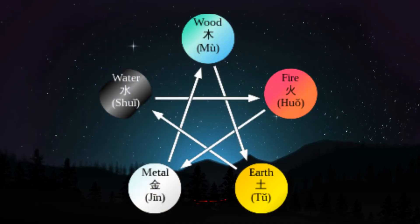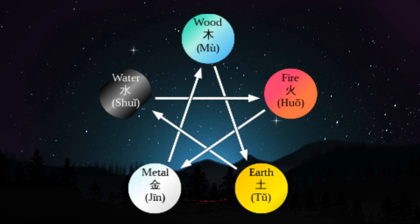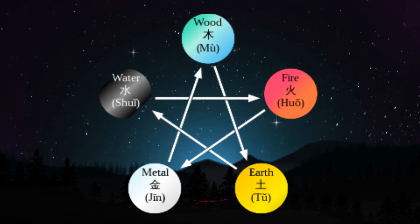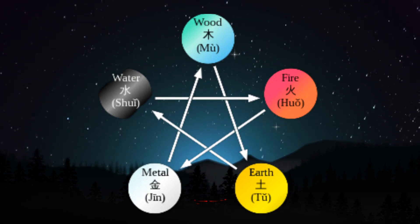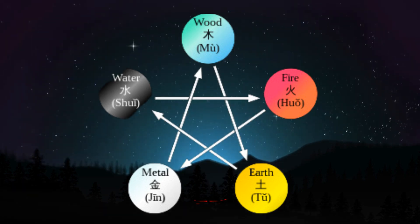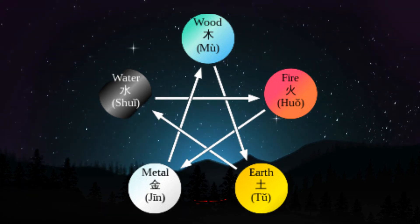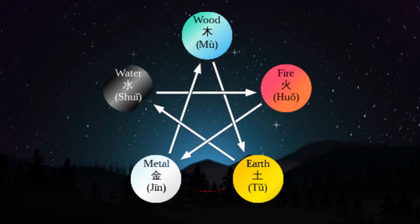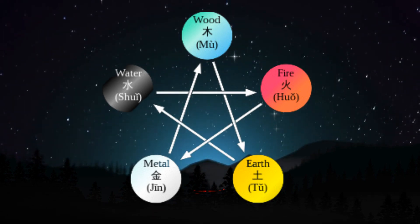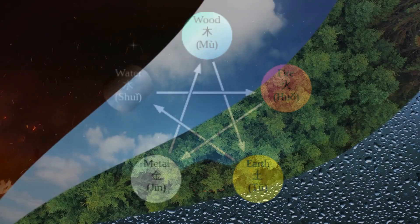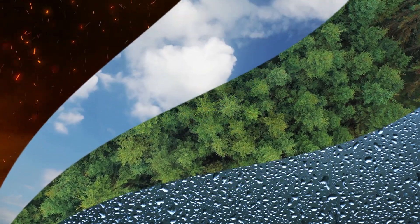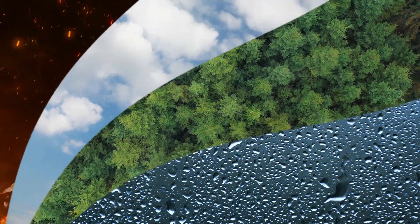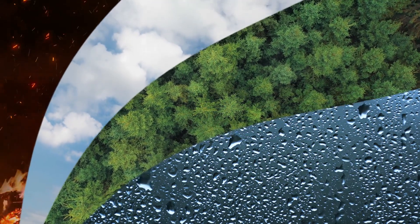But did you know there's an extra layer to this ancient system? Each zodiac sign is paired with one of the five elements — wood, fire, earth, metal and water — adding another dimension to understanding our personalities and destinies. You are also influenced by the dominant element in your birth year. So let's unravel the mysteries of these elements and answer the burning question: what is my Chinese zodiac element?